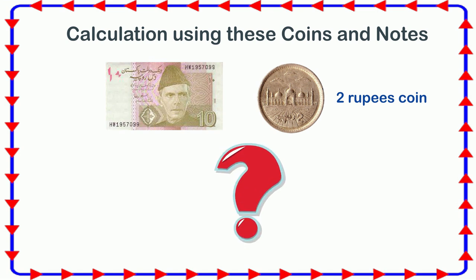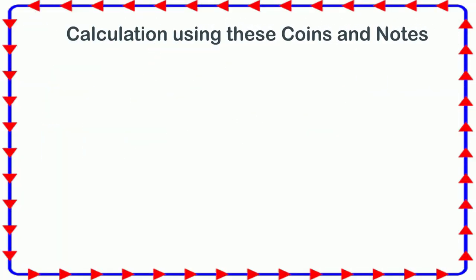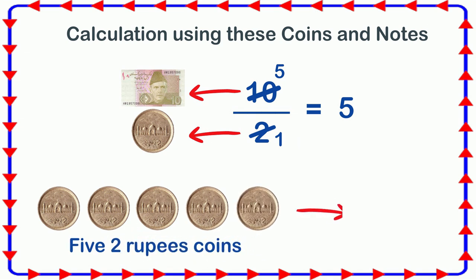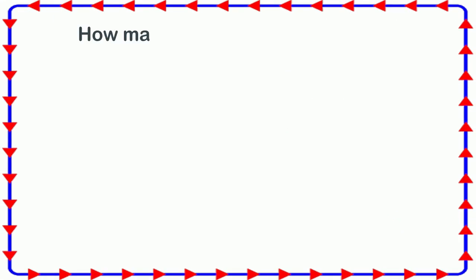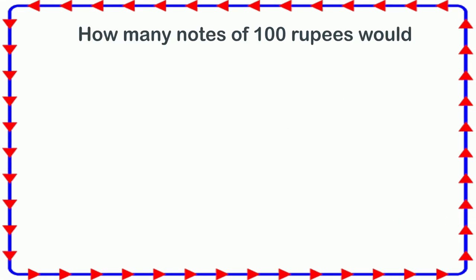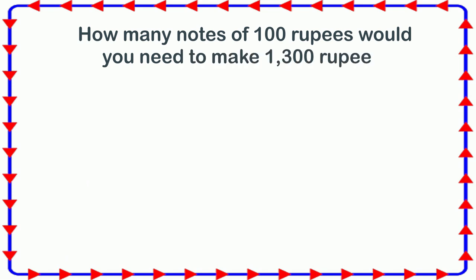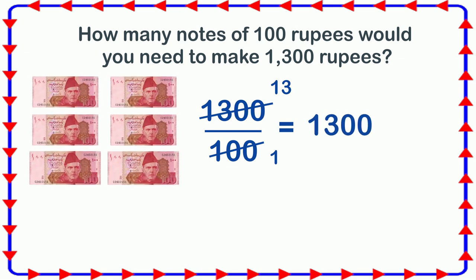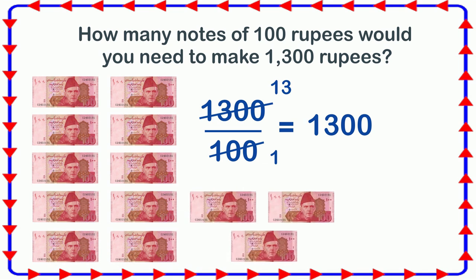How many two rupees coins would you need to make ten rupees? If you divide ten by two, you get five. So you need five two-rupee coins to make ten rupees. How many notes of hundred rupees would you need to make thirteen hundred rupees? Let's divide thirteen hundred by hundred — we get thirteen. So you need thirteen notes of hundred rupees to make thirteen hundred rupees.